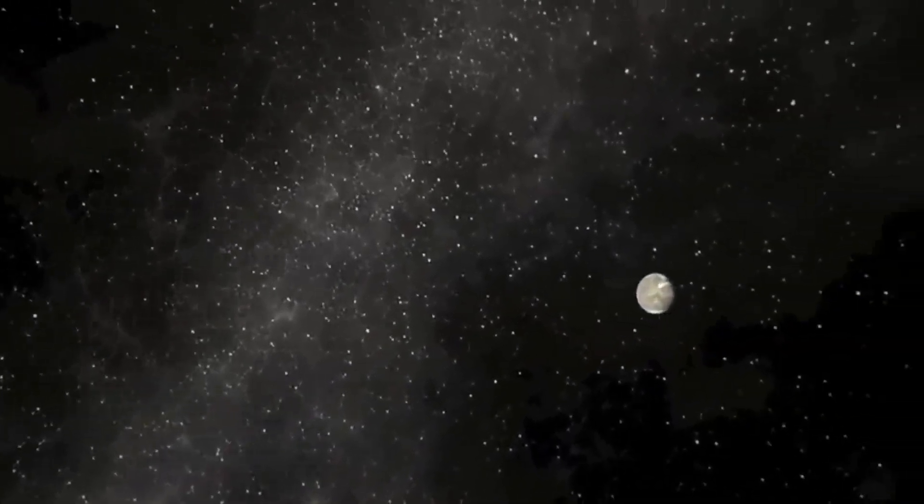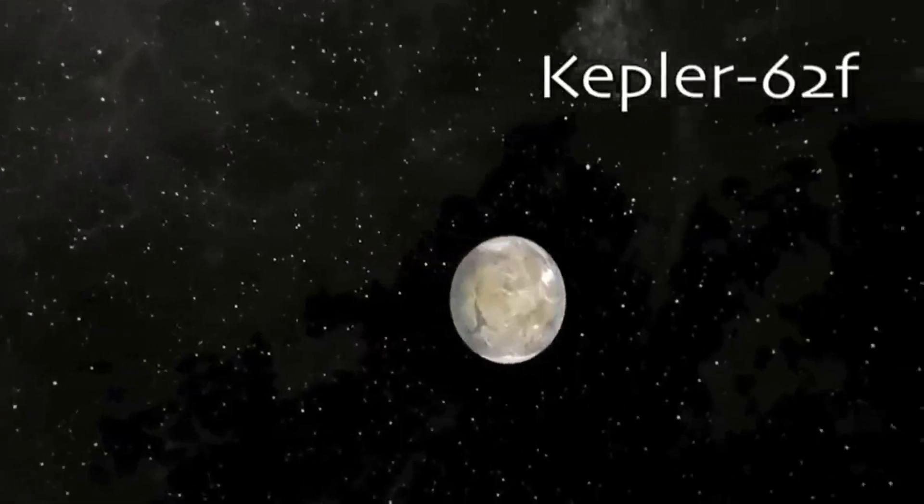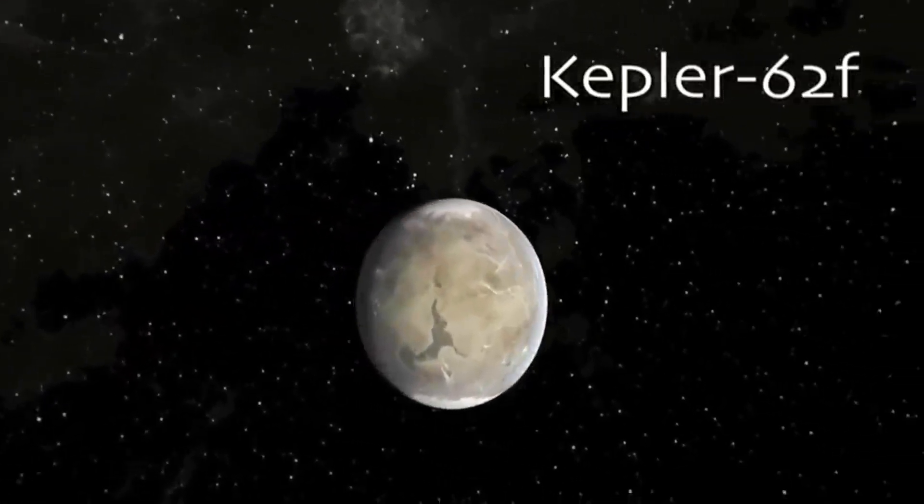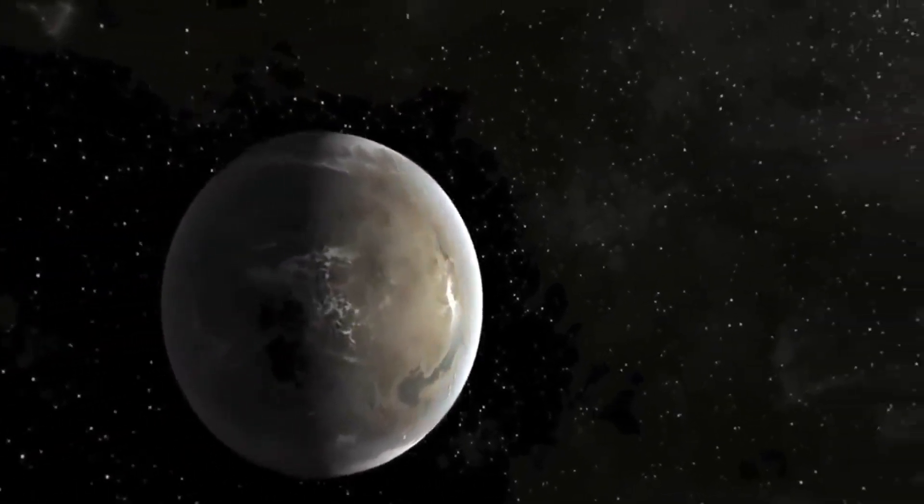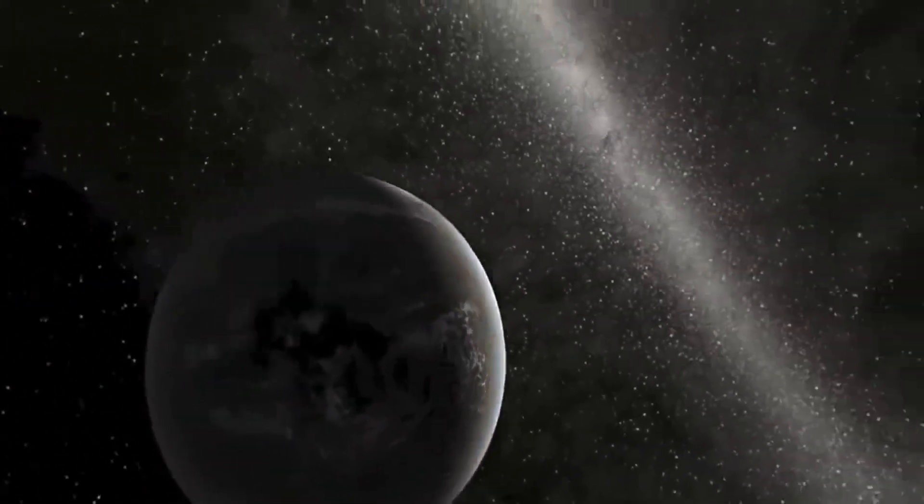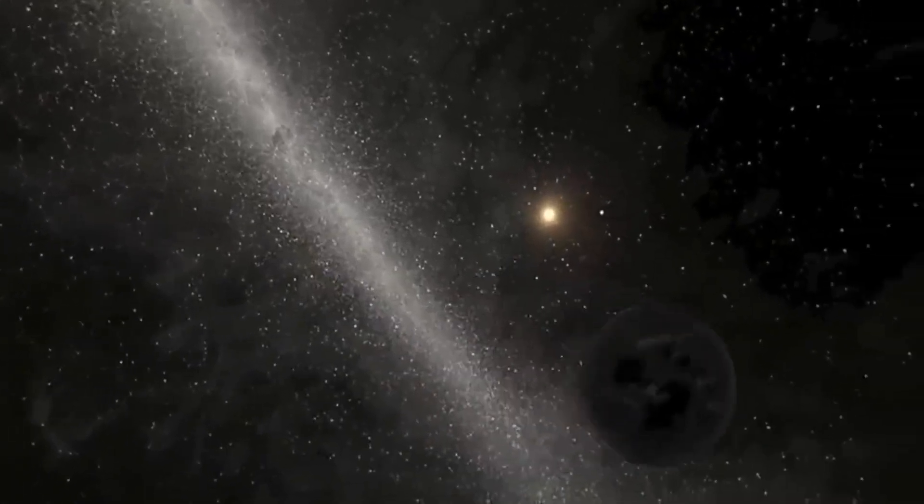Further out, in a 267-day orbit, Kepler-62f is about 40% larger than Earth. And it's almost surely cooler. In fact, it could be an ice ball from pole to pole, unless it has a lot of carbon dioxide in its atmosphere.